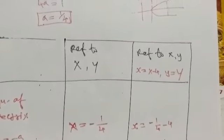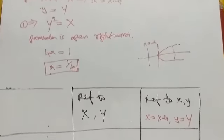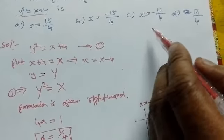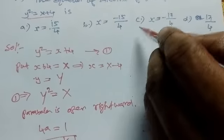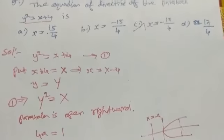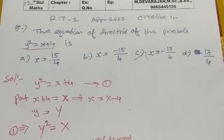If you check the options, minus 17 by 4, so option C. Thanks for watching.